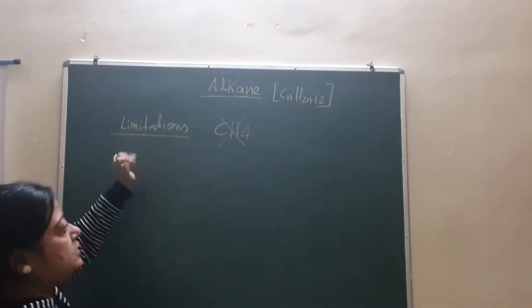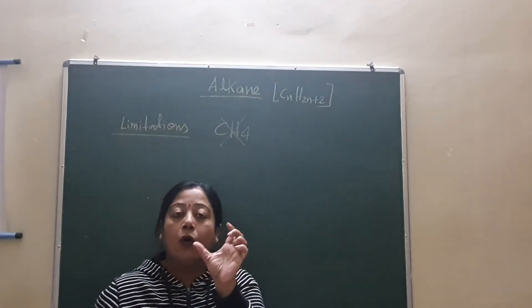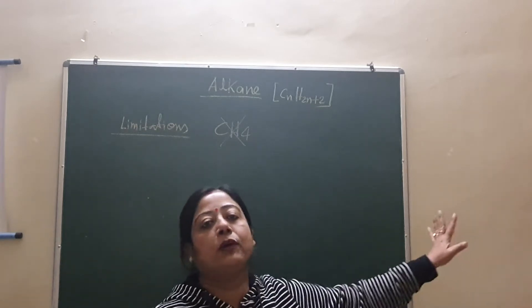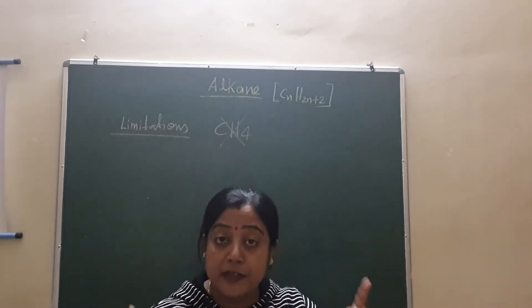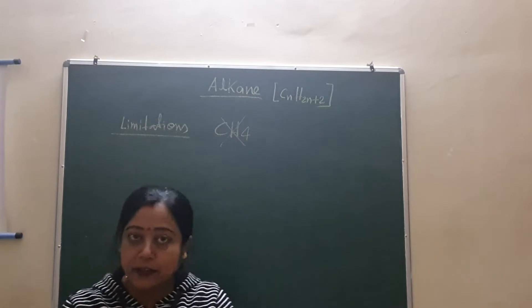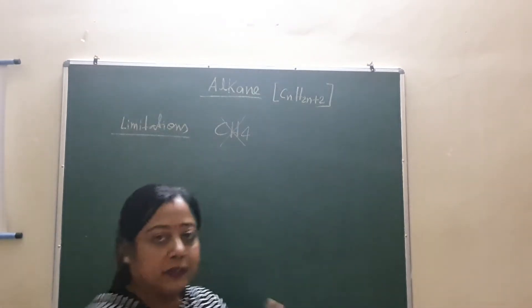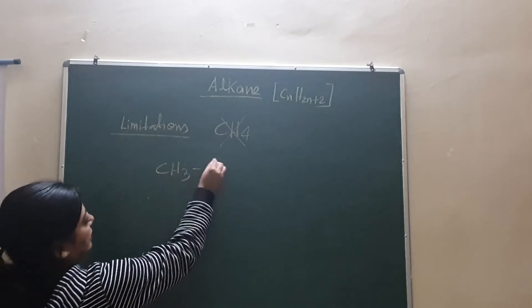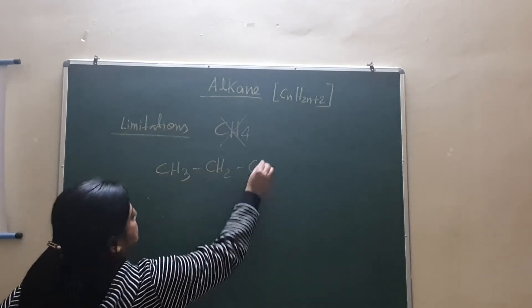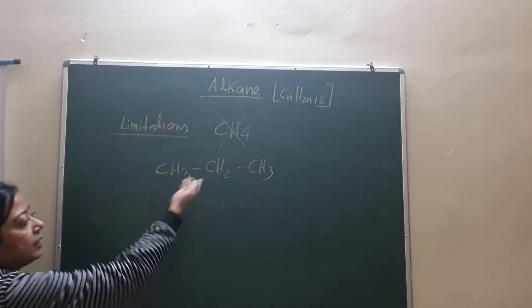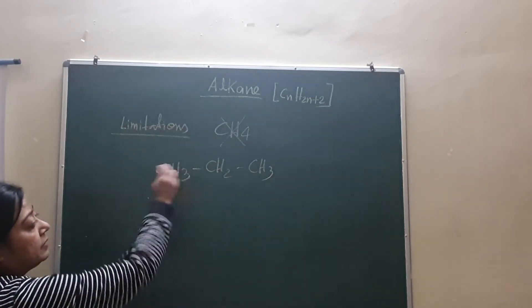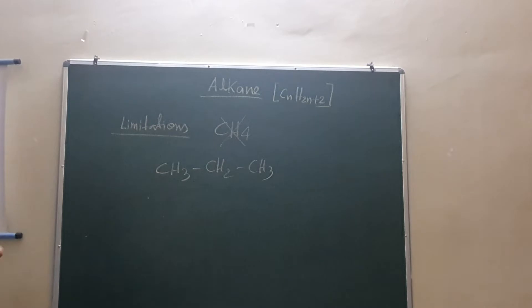So this is the first limitation of Wurtz reaction. We can't prepare methane by this reaction. Another limitation is: odd number of carbon containing alkane we can't never prepare. Why? Suppose you want to prepare this compound, propane containing 3 carbon atoms, that is odd number.